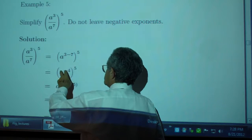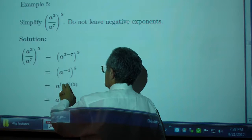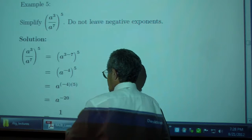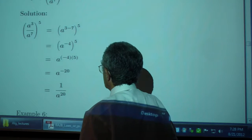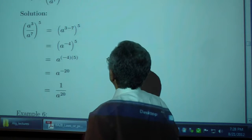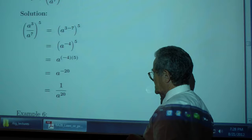So you can do the inside first, like we did here, and then you multiply these two exponents. You get 8 to the negative 20, which is 1 over 8 to the 20th. Leave no negative exponents.